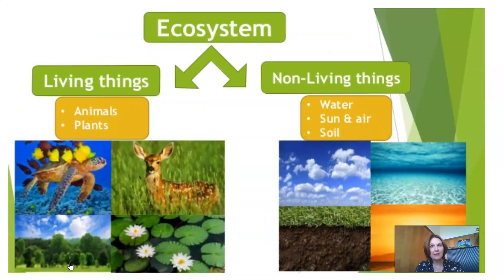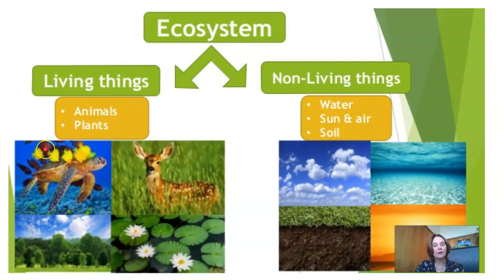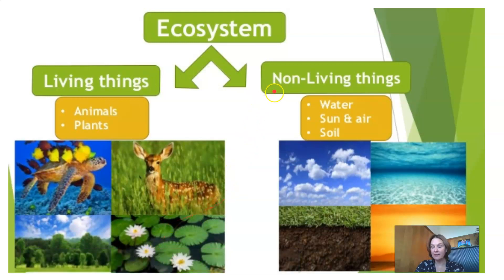How do these relationships work between the living and non-living things? Let's take a closer look. Living things, as I said before, are called biotic factors, and include things like animals and plants. Non-living things, or abiotic factors, include things like water, sun, air, and soil.